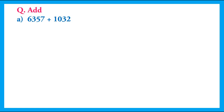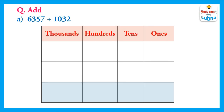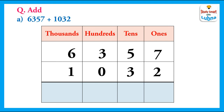One more question. We have to add 6357 and 1032. We will write these 4-digit numbers below their place values: 6357 and 1032. We will add them. We will add the ones. 7 plus 2 equals 9. We write 9 in the ones column.